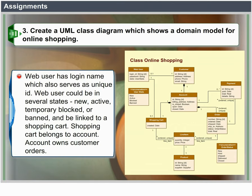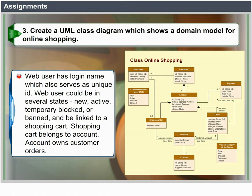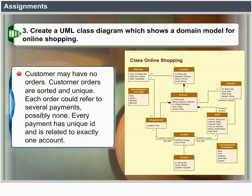Web user has a login name, which also serves as a unique ID. A web user could be in several states: new, active, temporary block or ban, and be linked to a shopping cart. Shopping cart belongs to an account. Account owns customer orders. Customer may have no orders. Customer orders are sorted and unique.